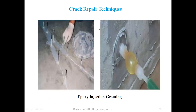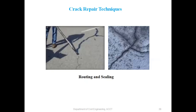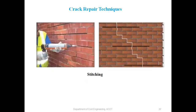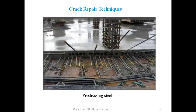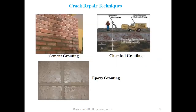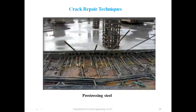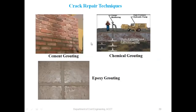Epoxy injection grouting: at intervals the injection of grouting is done and the repair is completed inside the concrete. Routing and sealing: where there are cracks, epoxy or suitable material is added in the concrete and the cracks are sealed. Stitching: using epoxy or other materials, stitches are made on the walls. Pre-stressing steel: if the slab has developed cracks, pre-stressing is done by introducing steel inside the slab. Cement grouting, chemical grouting, and epoxy grouting are also used.